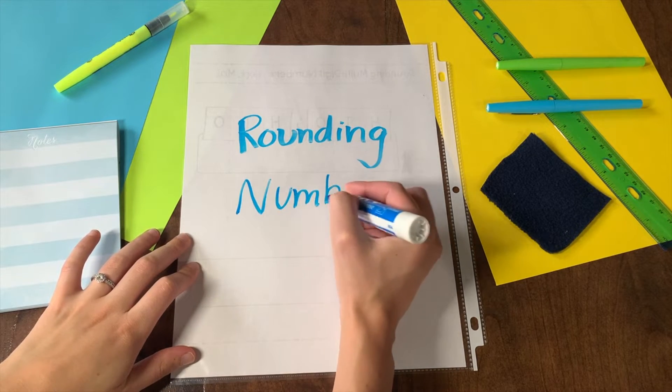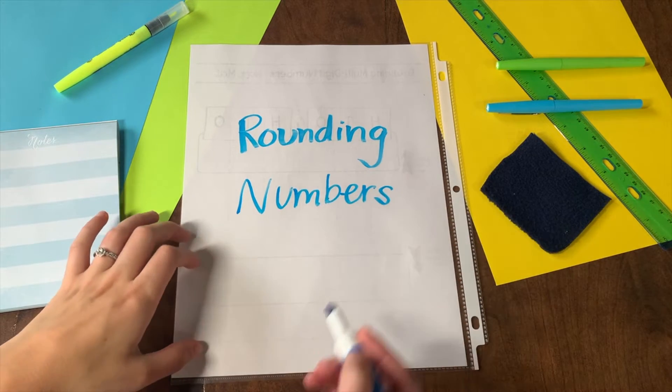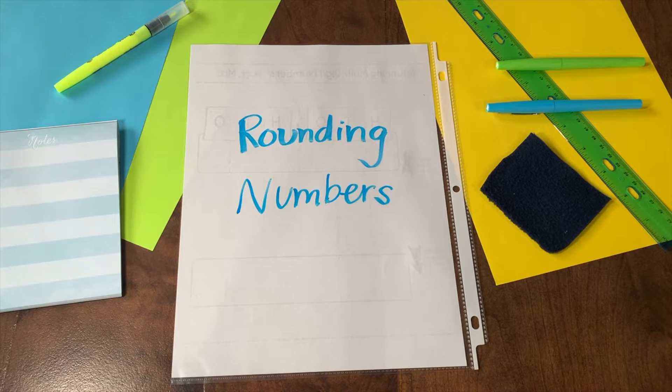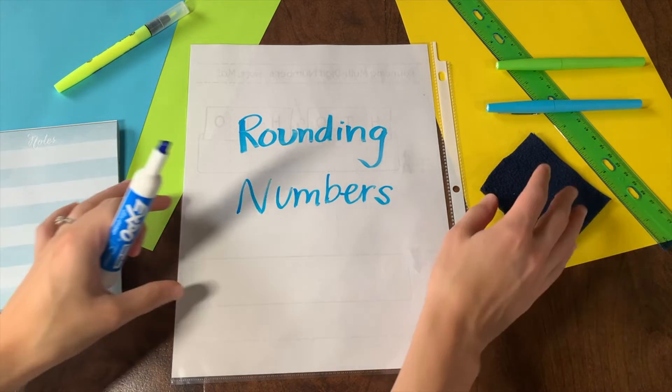Rounding numbers gives us an estimate. It allows us to check our work to see if our answer is reasonable and solve problems with easier numbers.